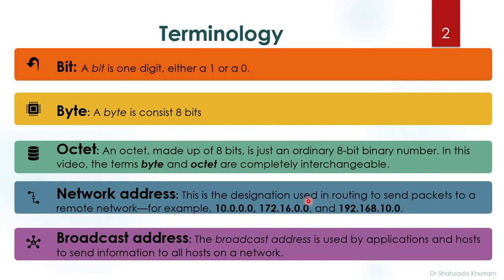First, there is some terminology used in this video. A bit is a single digit, either one or zero. A byte consists of eight bits — eight bits equal one byte. An octet is also made up of 8 bits, just an ordinary 8-bit binary number. In this video, the terms byte and octet are completely interchangeable.